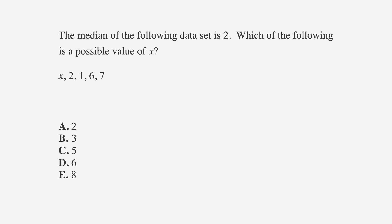Now, let's take a look at how finding the median shows up on the ACT. The median of the following data set is 2, which of the following is a possible value of x: x, 2, 1, 6, and 7. A is 2, B is 3, C is 5, D is 6, and E is 8. As usual, we'll underline our facts, circle our keywords, and label our answer choices.